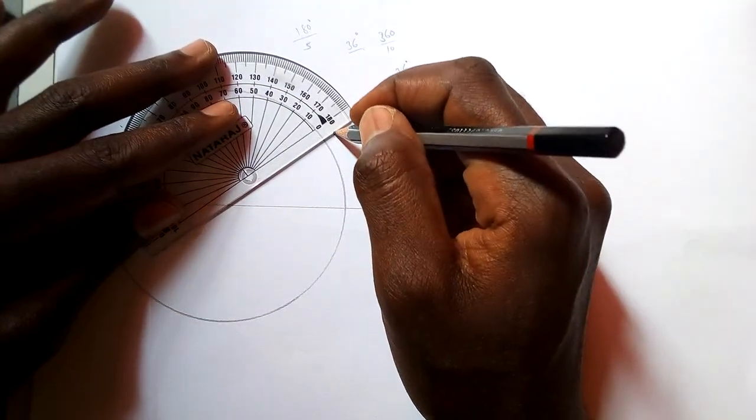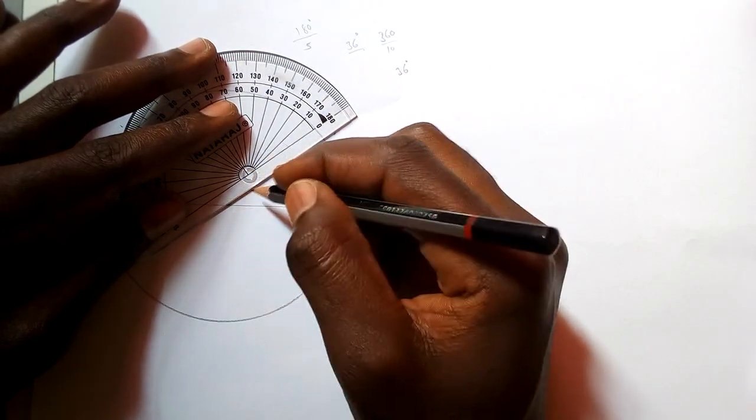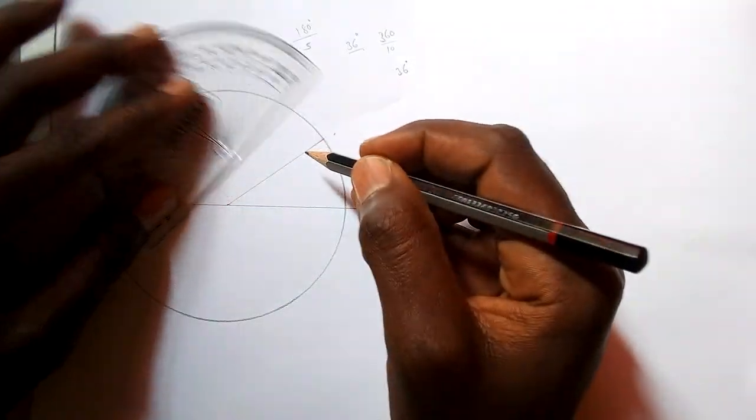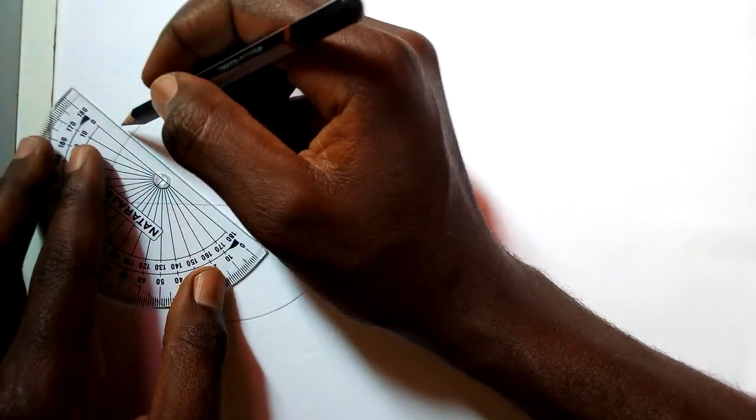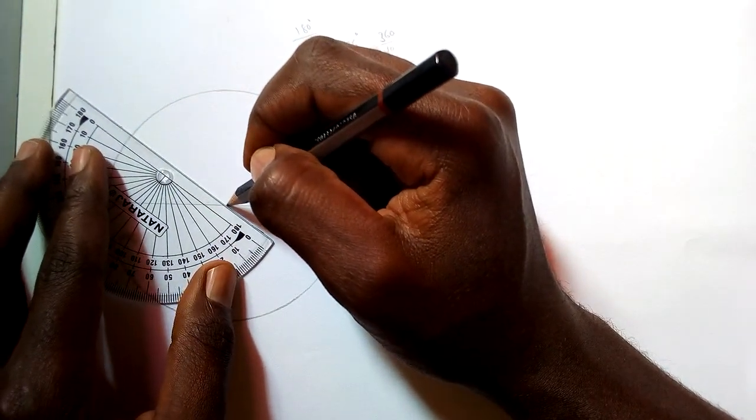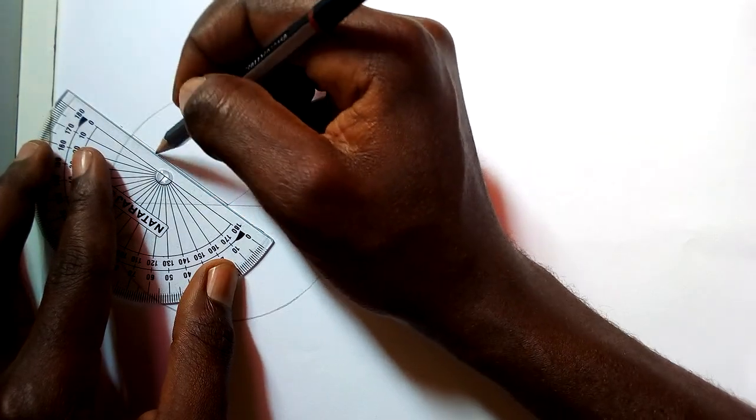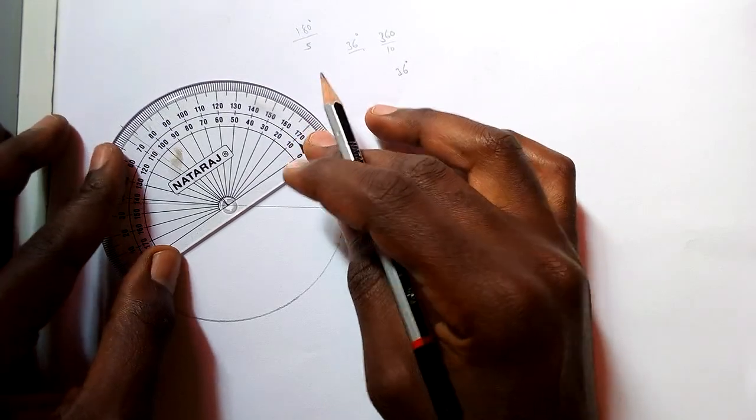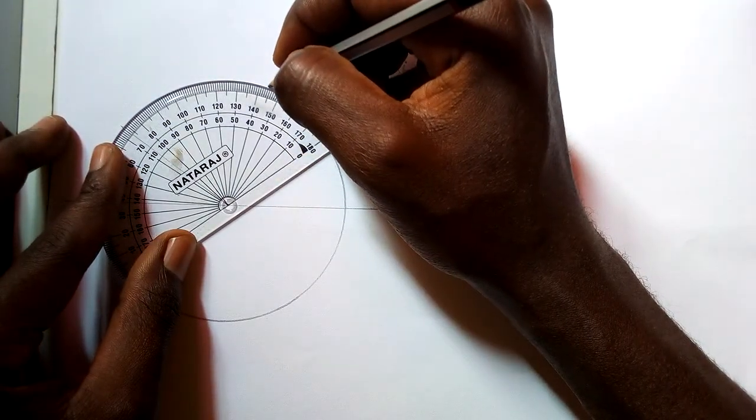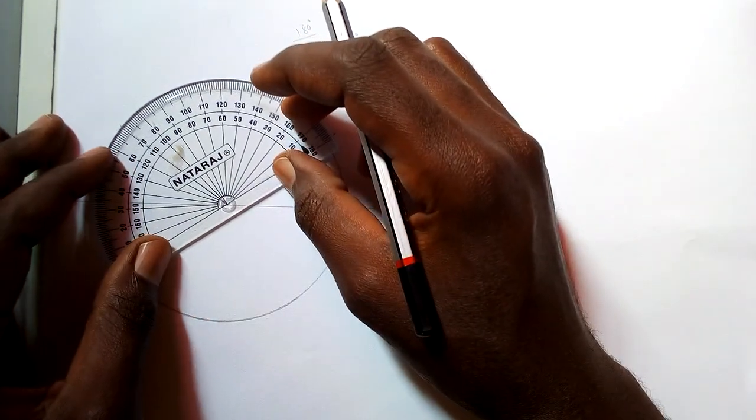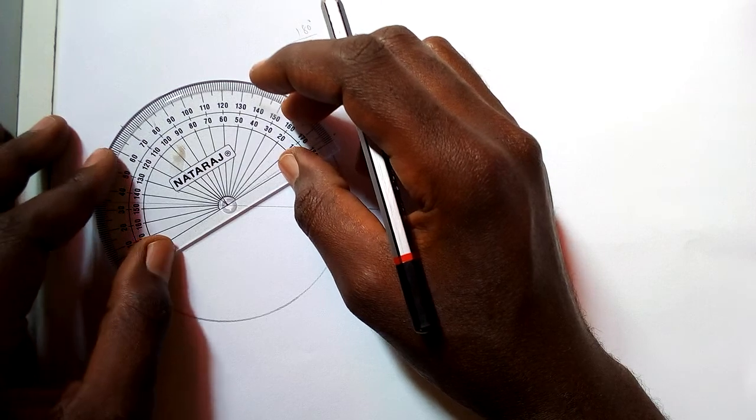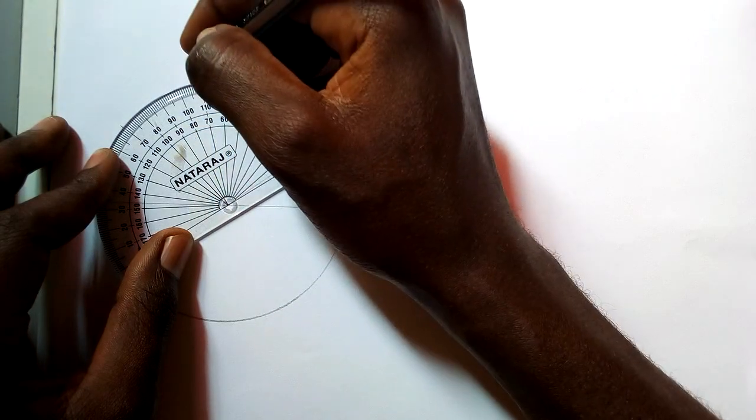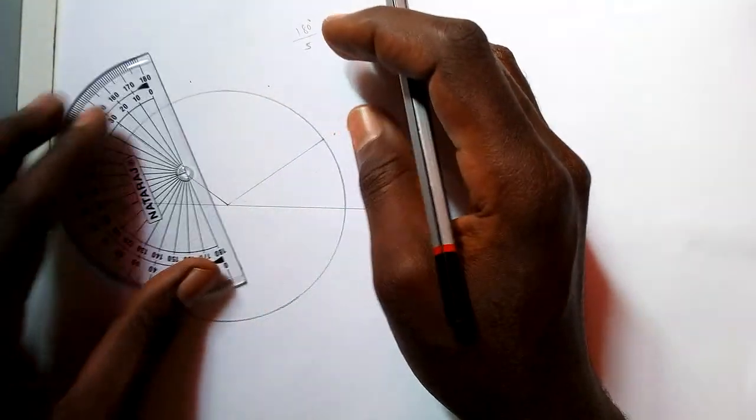So 36 on this side, and you are doing these two points, and you are doing these two points. So that is 36, and this is 36, and then doing another point.